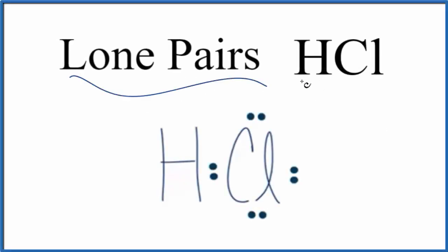Let's find the number of lone pairs for HCl. This is hydrogen chloride. When it's in water we call it hydrochloric acid.